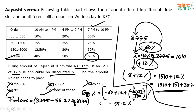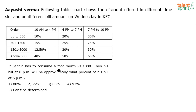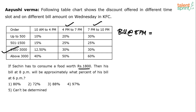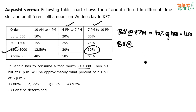Fourth question: If Sachin consumes food worth ₹1800, his bill at 8 PM will be approximately what percent of his bill at 6 PM? ₹1800 falls in the 1501–3000 range. At 8 PM (7–10 PM slot) he gets 30% discount, so he pays 70% of 1800 = ₹1260.